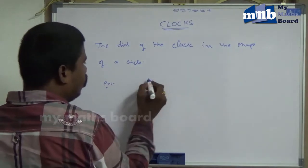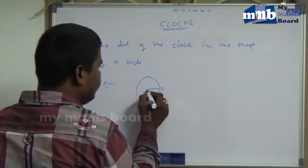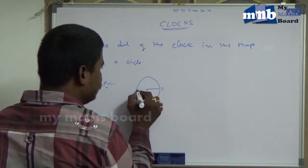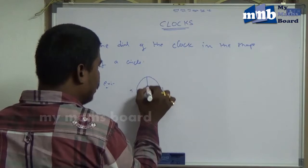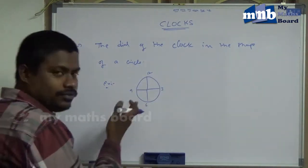For example, all clocks are in the shape of circles, just like that: 3, 6, 9, 12. Generally, the clocks are seen just like that.